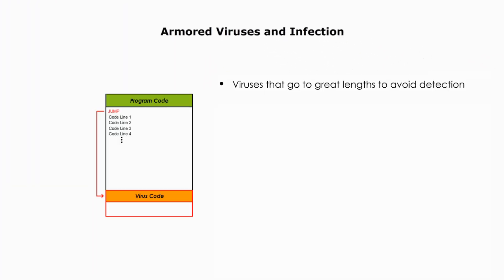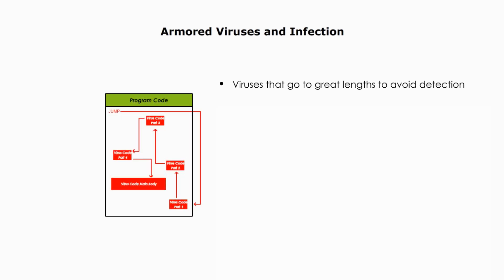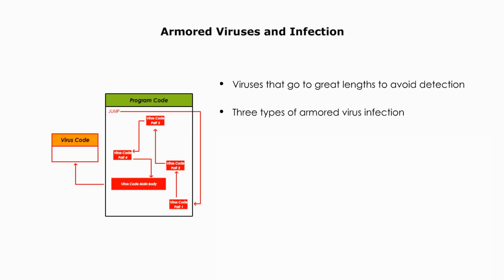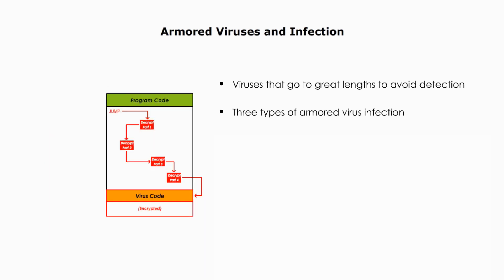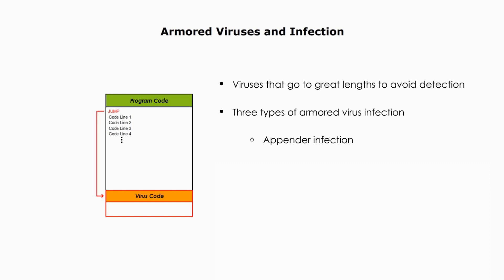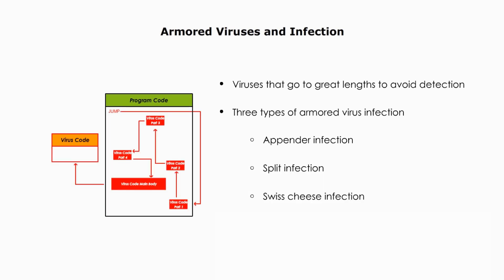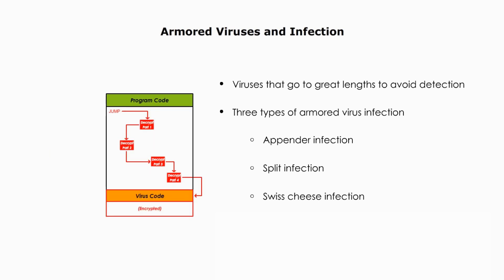Armored viruses are those that go to great lengths to avoid detection. There are three types of armored virus infection: appender infection, split infection, and Swiss cheese infection.